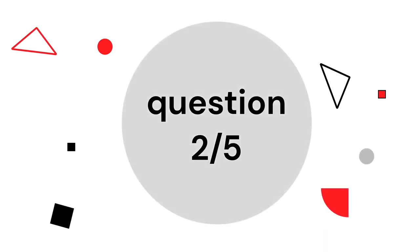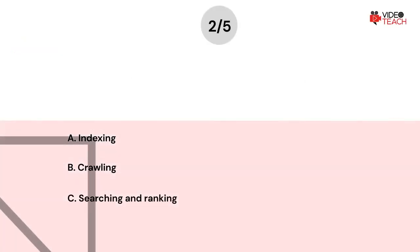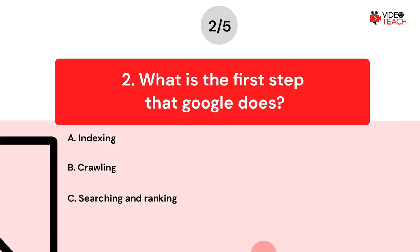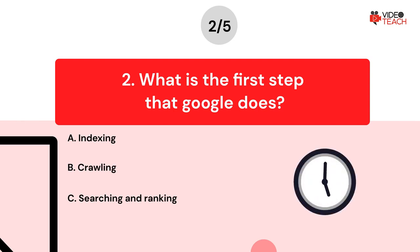Question number two. What is the first step that Google does? Option A: Indexing. Option B: Crawling. Option C: Searching and ranking. Now you have about 15 seconds to think about your answer.